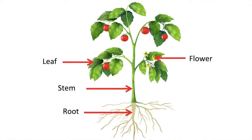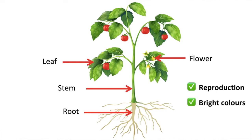Flower. Flowers are the reproductive organs of a plant. Flowers have petals which help to protect the parts of the flower, and the petals are usually brightly coloured and have a nice scent, which is important as it attracts pollinators. The flowers are also involved in producing seeds and fruit.